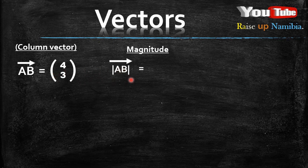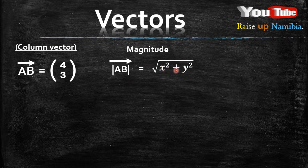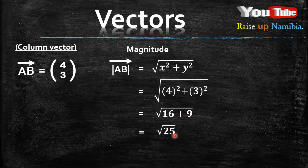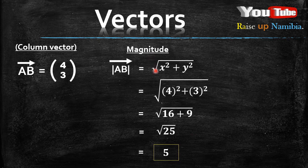Your teacher or textbook has probably told you to use the formula: the square root of x squared plus y squared. You look at your vector and plug in the values representing x and y — in this case 4 and 3. So you square 4 to get 16, square 3 to get 9, and 16 plus 9 gives 25. The square root of 25 is 5, and that's your final answer.